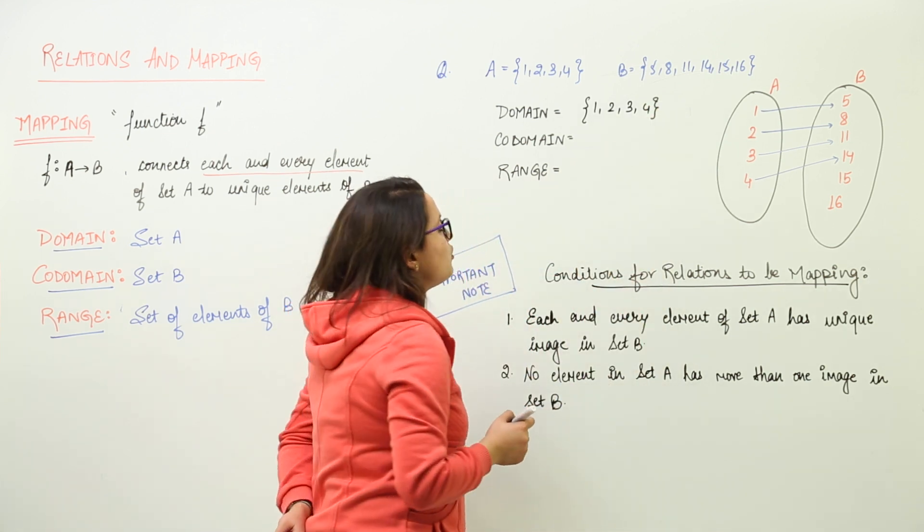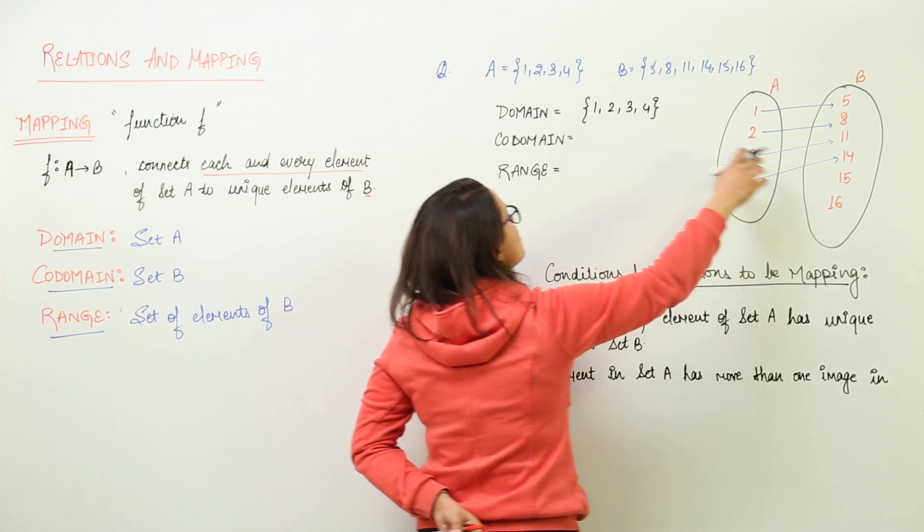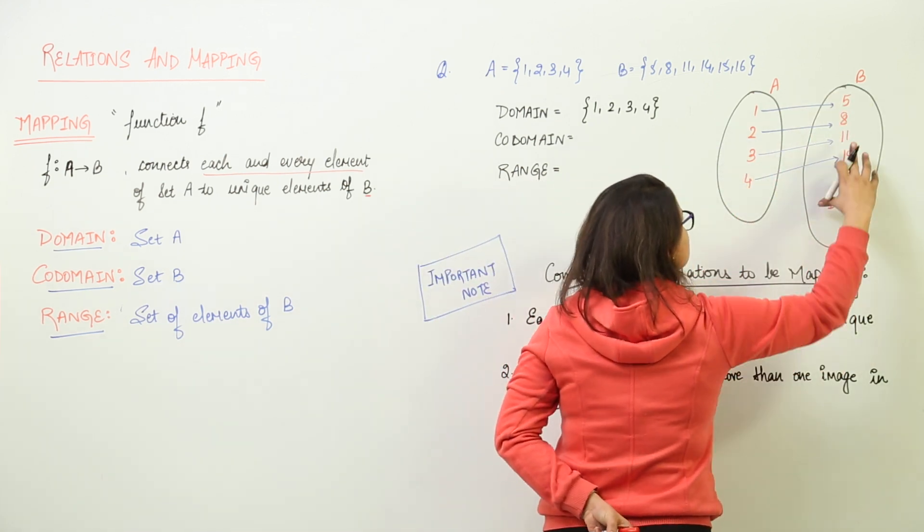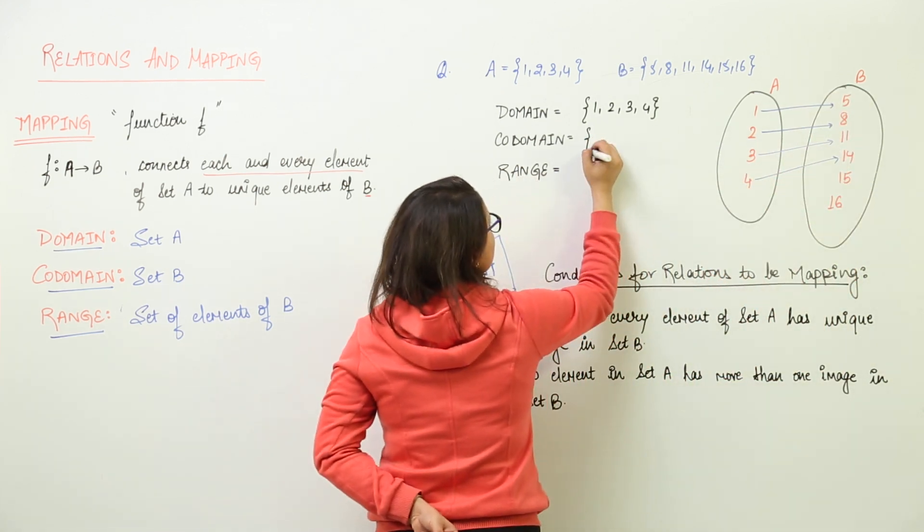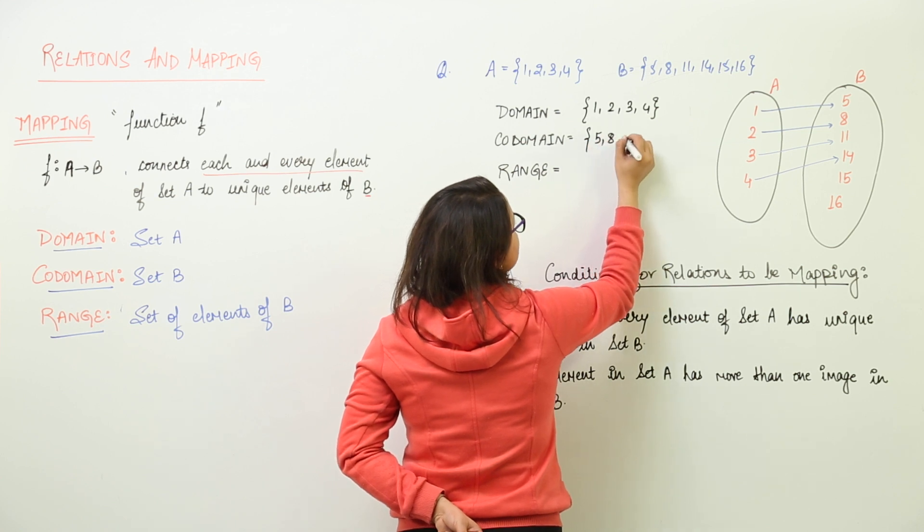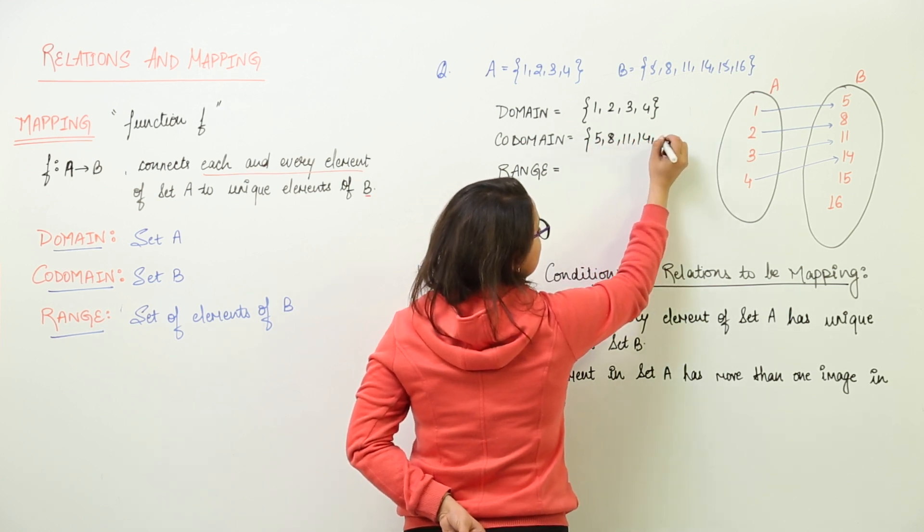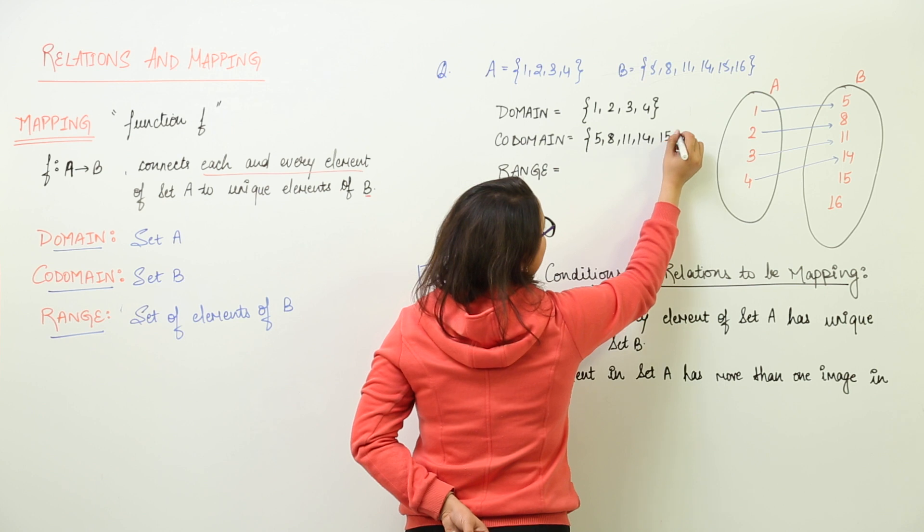Next, for writing the co-domain. Co-domain is actually set of all the values that are present in set B. So, you write over here 5, 8, 11, 14, 15 and 16.